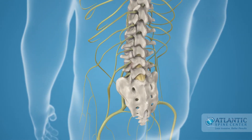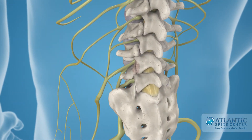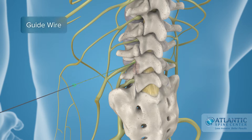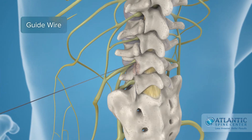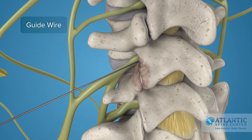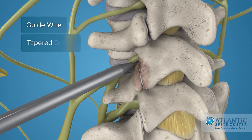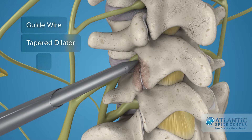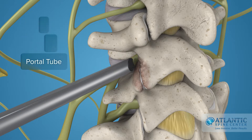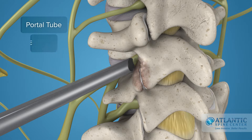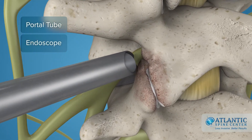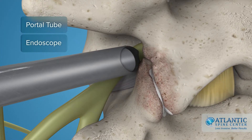Endoscopic lumbar foraminotomy is a minimally invasive procedure for treating foraminal stenosis. First, a thin guide wire is placed under x-ray control down to the involved level of the spine. A tapered dilator is inserted over the guide wire. A small tube is inserted over the dilator to create a portal down to the vertebra. The endoscope is placed through the tube and bone overgrowth is identified.